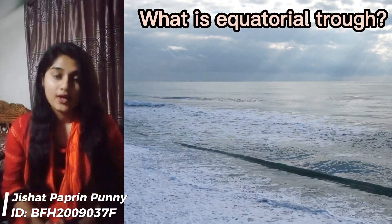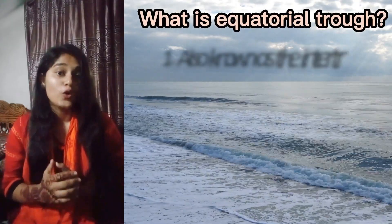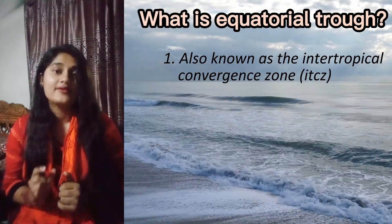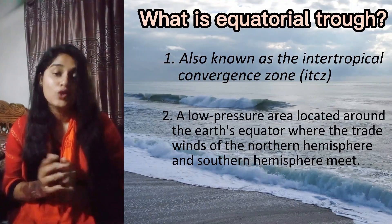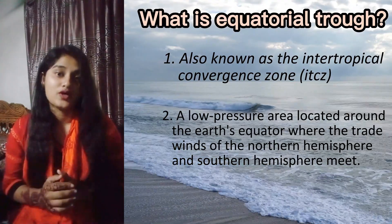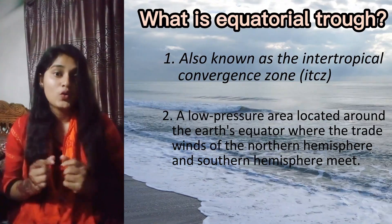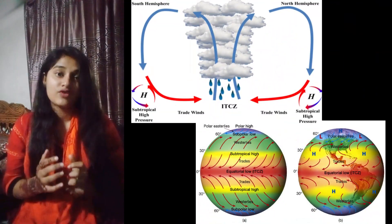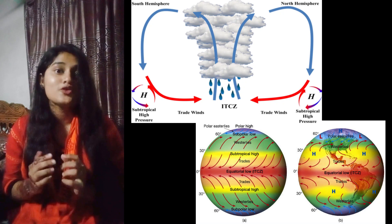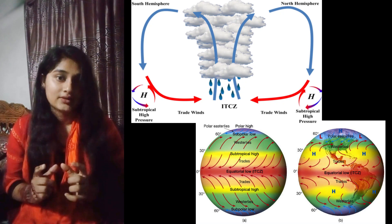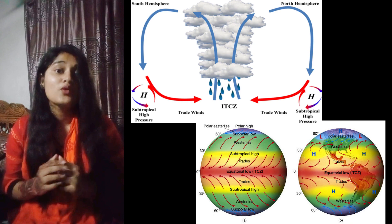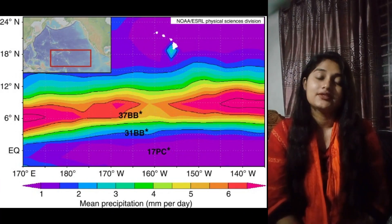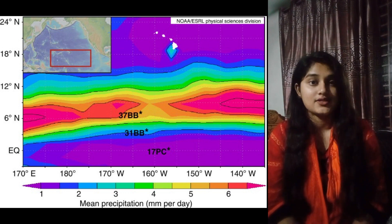What is the Equatorial Trap? The Equatorial Trap, also known as the Intertropical Convergence Zone, is a low pressure area located around the Earth's equator, where the trade winds of the Northern Hemisphere and Southern Hemisphere meet. This convergence of trade winds causes warm and moist air to rise, leading to the formation of cumulus clouds and thunderstorms. The Equatorial Trap is characterized by heavy rainfall and humid conditions.